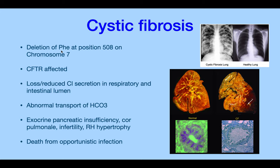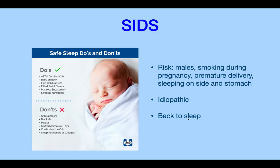Cystic fibrosis is a deletion of the phenylalanine gene at position 508 on chromosome 7, affecting the cystic fibrosis transmembrane conductance regulator (CFTR). There's loss or reduced chloride secretion in the respiratory and intestinal lumen, so water doesn't follow secretion — secretions become very thick and mucousy. There's also abnormal bicarbonate transport resulting in exocrine pancreatic insufficiency, cor pulmonale, infertility (sperm can't move through ducts), right heart hypertrophy, and death from opportunistic infections.